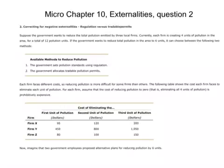The problem with regulation is that regulation is a blunt tool. You have to either tell each firm to reduce pollution by X amount, or you have to cap their total emissions. That sounds reasonable, but firms typically have different cost structures, and they're the only ones that know their cost structures.